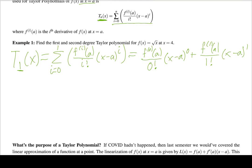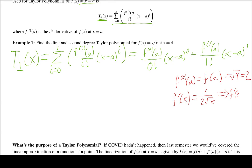To evaluate, I need f^(0)(a) and f'(a). f^(0)(a) is just f(a) = √4 = 2. For f'(a), the derivative of √x is 1/(2√x), so f'(4) = 1/(2·√4) = 1/4.